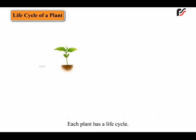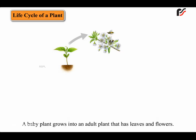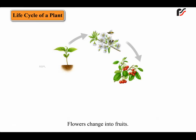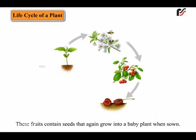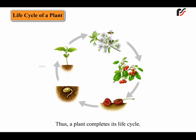Each plant has a life cycle. A baby plant grows into an adult plant that has leaves and flowers. Flowers change into fruits. These fruits contain seeds that again grow into a baby plant when sown. Thus, a plant completes its life cycle.